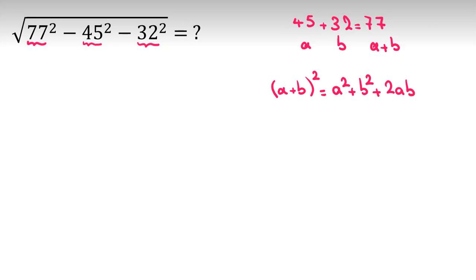So here it is, let me write, let's call it equal to, for example, T. T equal to square root of A plus B squared minus A squared minus B squared, which equal to square root of, if I apply this identity,